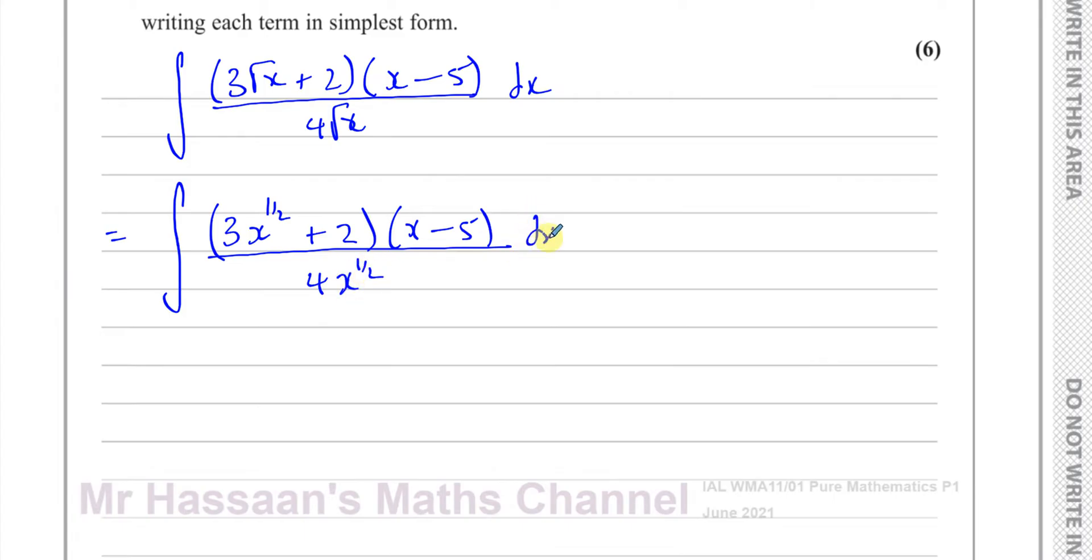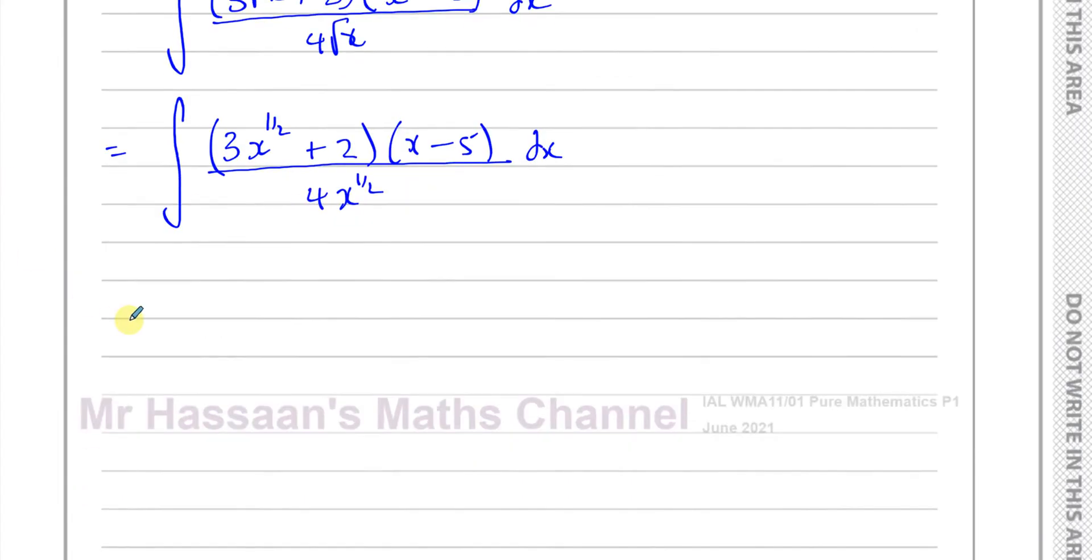That will help me to simplify it so it's ready for integration. I haven't integrated yet, that's why I still have the integral and the dx here. But what I need to do now is to expand this bracket. So 3x to the power of a half times x—now this x is actually x to the power of 1, so you have to add the powers.